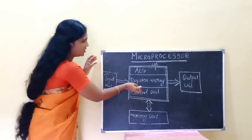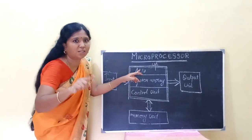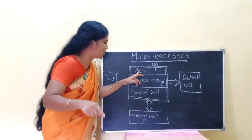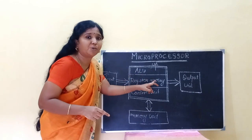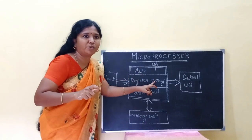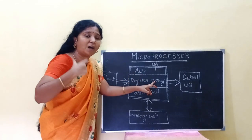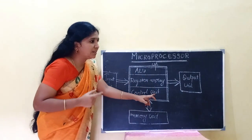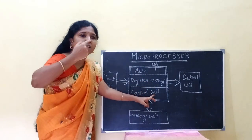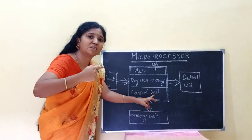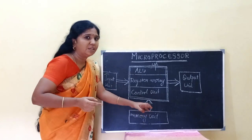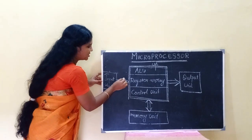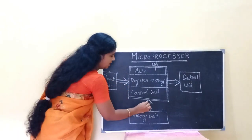The Process: the ALU performs all arithmetic and logical operations. Registers temporarily store data for fast processing. The Control Unit manages all operations — it plans the structure and the bus system.